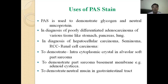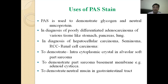Some uses of PAS stain: it is used to demonstrate glycogen and neutral mucoproteins. It is also used for the diagnosis of poorly differentiated adenocarcinomas of various tissues like stomach, pancreas, and lungs. It is also used for the diagnosis of hepatocellular carcinomas and renal cell carcinoma, also known as RCC. They are also used to demonstrate intracytoplasmic crystals in alveolar soft part sarcoma. PAS stain can also be used to demonstrate basement membrane — example is adenoid cystic carcinoma — and to demonstrate neutral mucin in the gastrointestinal tract.